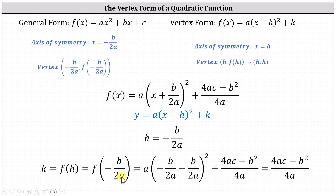Using the vertex form we just found, if we substitute −b/2a for x, we have a times the square of (−b/2a + b/2a) plus (4ac − b²)/4a. Notice we have zero inside the parentheses, showing that k — or f(h) — equals (4ac − b²)/4a, verifying this is the y-coordinate of the vertex.